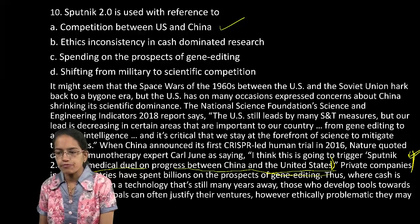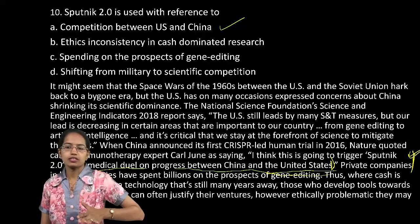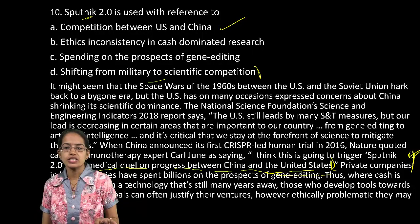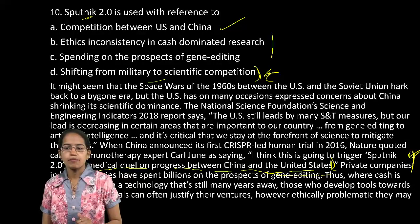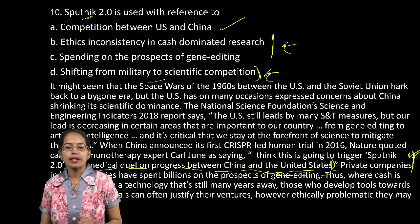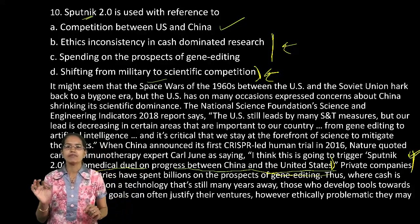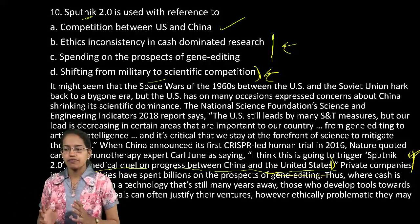Some of you have been confused with B and D as options. B and D cannot be the correct option because shifting from military to scientific is not important here — Sputnik was in space science, not related to military. It's not mentioned which countries are indicated in that sense. The remaining two options also don't work because ethical issues have not been touched. It's just explaining that it's a biomedical duel on progress between China and United States — a very direct section from the passage itself. Read the passage very carefully.